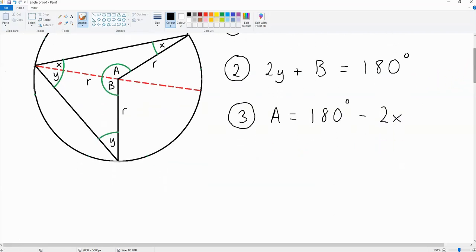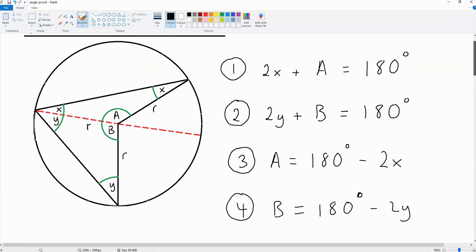Now, let's get the value of b. B is going to be equal to 180 degrees minus 2y.